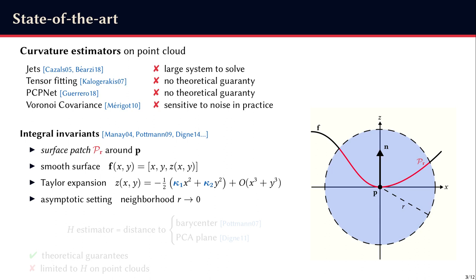The goal of integral invariance is to estimate differential properties by integrating geometric quantities over the surface patch around P at a distance r, as shown in red on this illustration. Then we look at how the estimator behaves when the size of the neighborhood tends toward 0, as if we were approaching an ideal pointwise calculation.